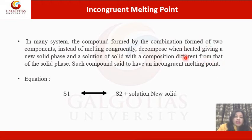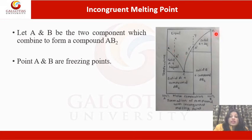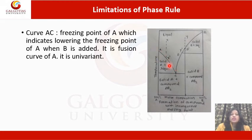The equation is: S1 (the original solid) is in equilibrium between S2 plus solution of the new solid. Let A and B be the two components which combine to form compound AB2. Points A and B are the freezing points. Point C is the eutectic point of the system, which is non-variant as solid A, solid AB2, and liquid phase are present in equilibrium. Curve AC is the freezing point of A, indicating the lowering of the freezing point of A when B is added. It is the fusion curve of A and is univariant.